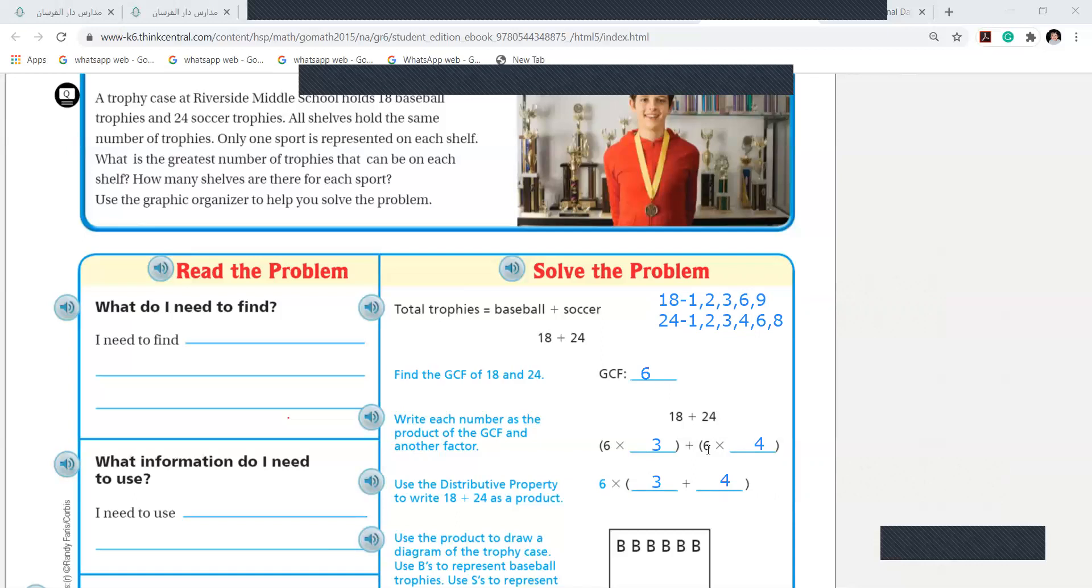So 6 times 3, distributive property, is 18. 6 times 4 is 24. 6 comes out. What is left? 3 plus 4. Right? Malak, do you know what I'm doing here? Yeah, miss. Do you know what I'm doing here? Yeah, miss. I wrote the GCF. Instead of 18, I wrote 6 times 3. Instead of 24, I wrote 6 times 4. Because this is distributive property. Then both, so I take 6 outside. When I take 6 outside, what is left in the first one? 3. What is left in the second one? 4. You want me to explain again? No, miss, I understand. Sure.